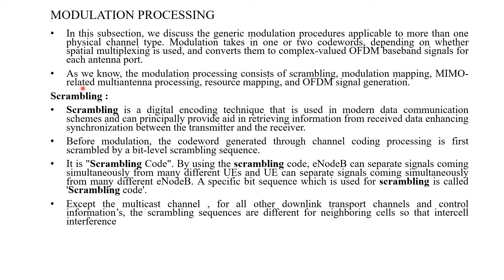The modulation processing mainly consists of scrambling, modulation mapping, MIMO-related multi-antenna processing, resource mapping, and OFDM signal generation.